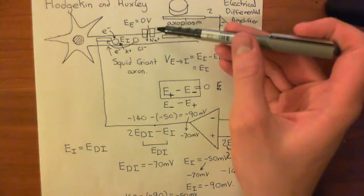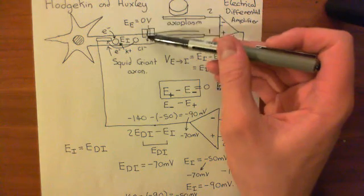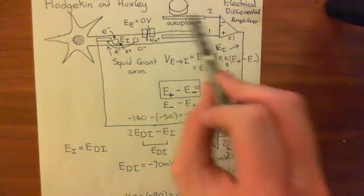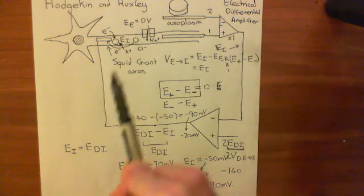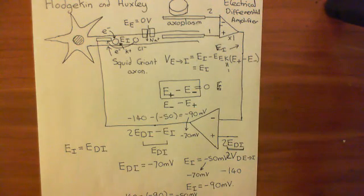When we open these voltage-gated sodium channels, sodium is moving in. That's going to disturb the electrical potential difference across this membrane. However, this apparatus is designed to maintain a constant electrical potential difference across that membrane.